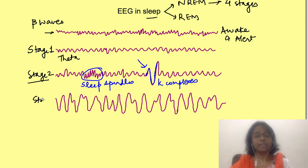In stage 3 and stage 4 we see delta waves of decreased frequency and high amplitude. Due to these low frequency waves seen in these stages, stage 3 and 4 are also known as slow wave sleep.